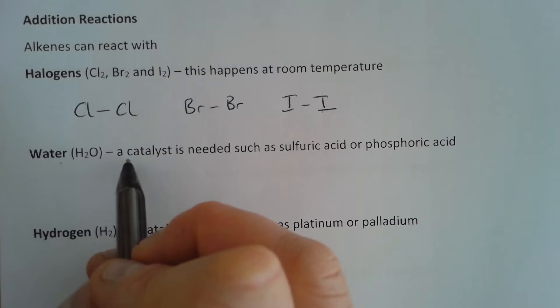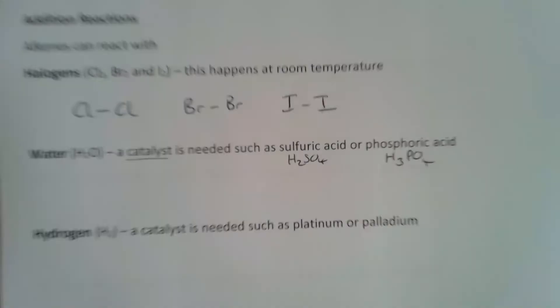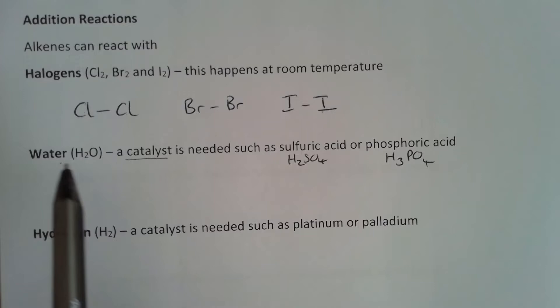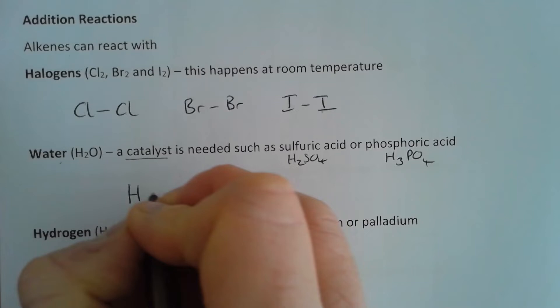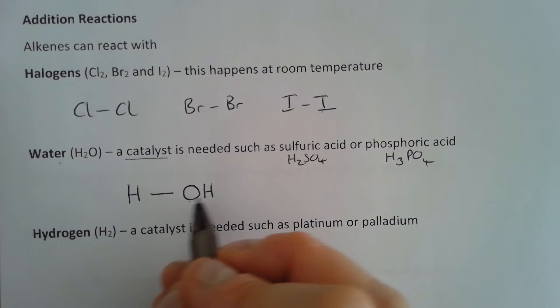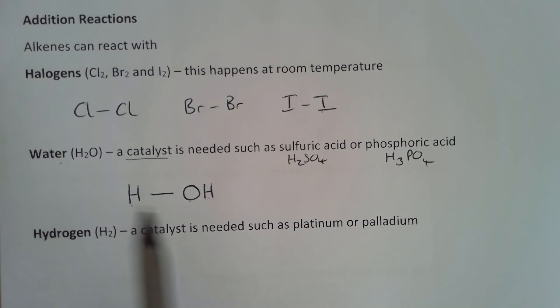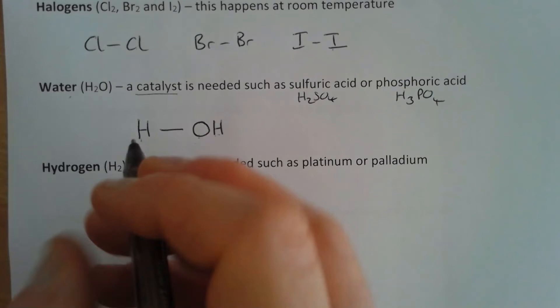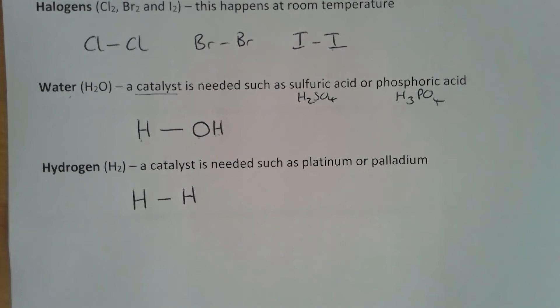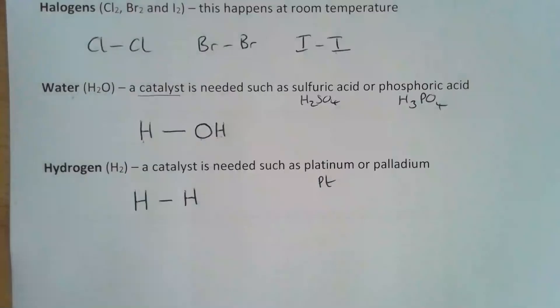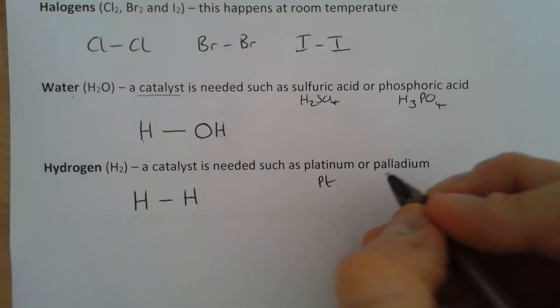Alkenes can also react with water, but this reaction won't happen at room temperature — we need a catalyst such as sulfuric acid. I'll draw water as a hydrogen bonded to an oxygen and another hydrogen, which lets us think of it as an H and an OH. Finally, alkenes can react with hydrogen, H₂, but this also does not take place at room temperature and requires a catalyst such as platinum (Pt) or palladium (Pd).